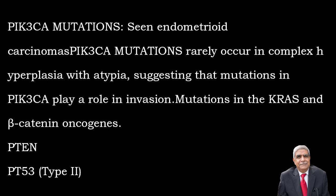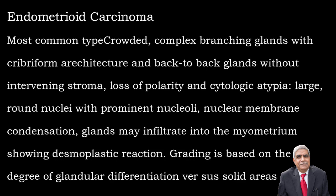Type 1 endometrial carcinoma is comparatively less aggressive than type 2, which is more aggressive and poorly differentiated. Endometrial adenocarcinoma is called endometrioid carcinoma because the glands simulate the proliferative type of endometrium. Type 2 has different histological patterns — serous carcinoma or clear cell carcinoma — which are very aggressive.